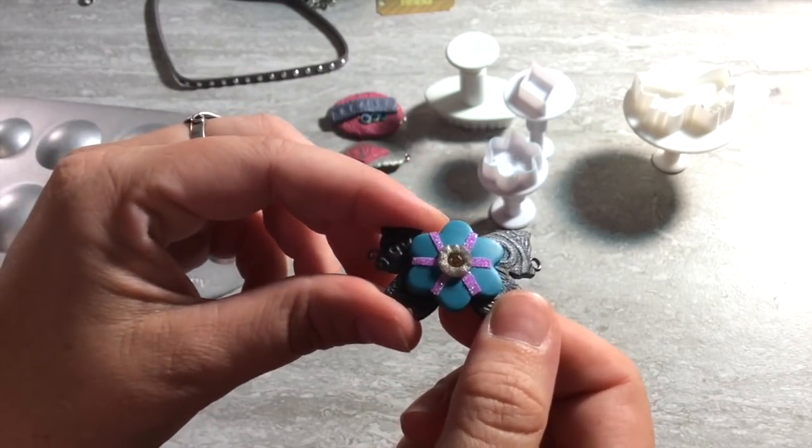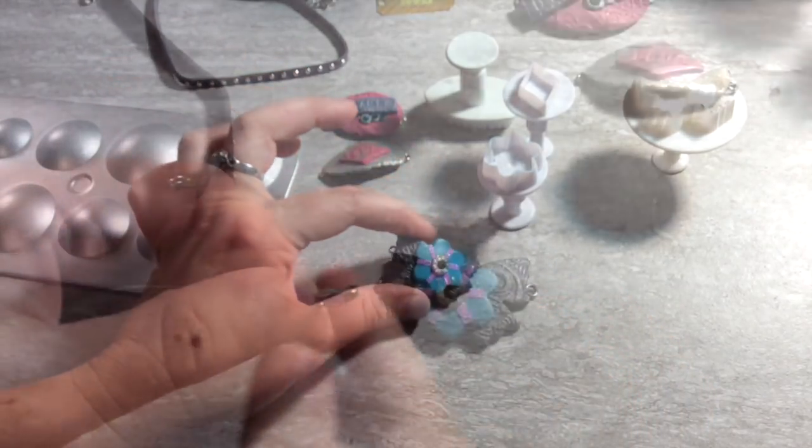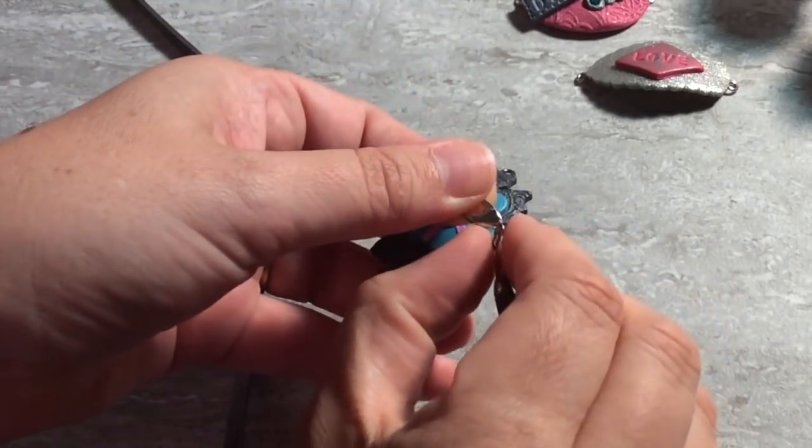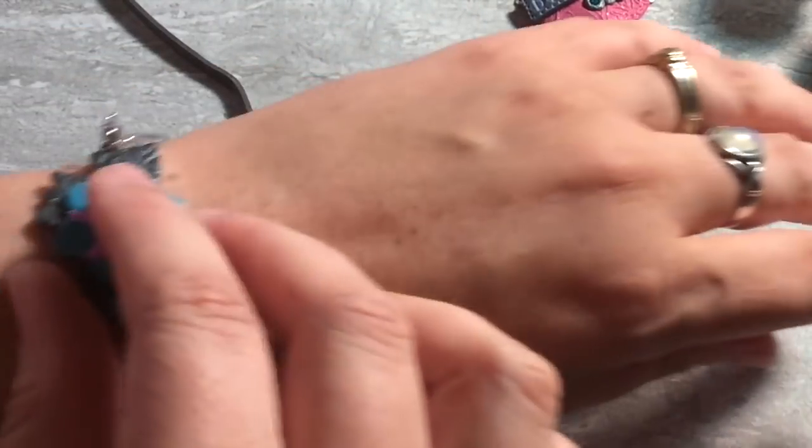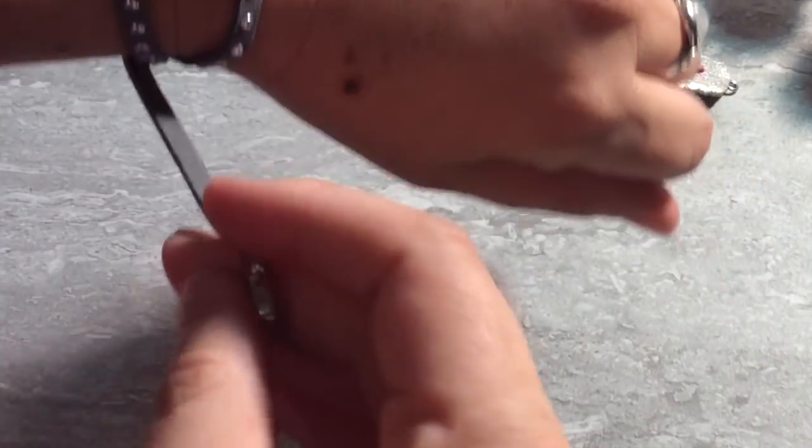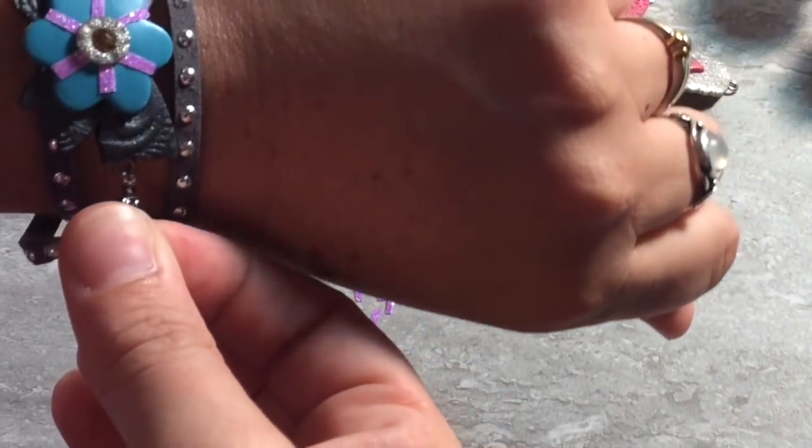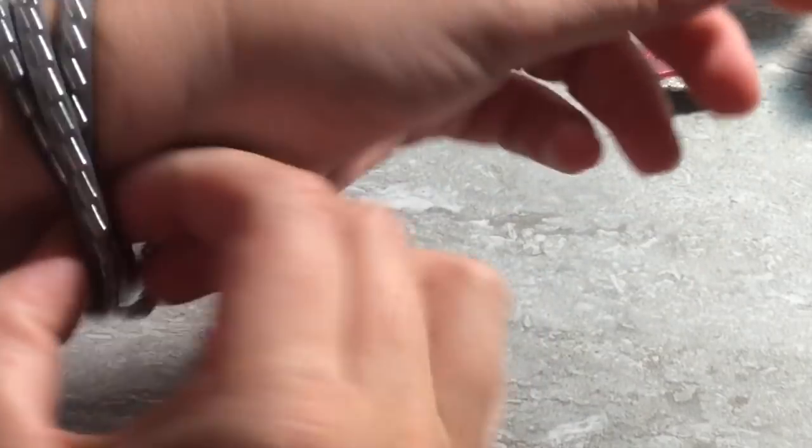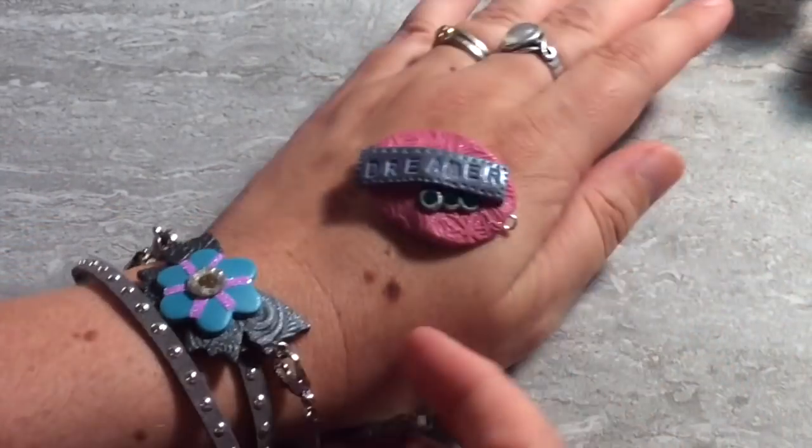Now we can try this on. All you'd have to do is attach your already pre-attached lobster claws and wrap around your wrist a couple of times, and then connect it up on the other side. For me, I just have to loosen it and get it to be in the right spot. There you go. You can have infinite number of interchangeable beads to go in the middle of your bracelet there.